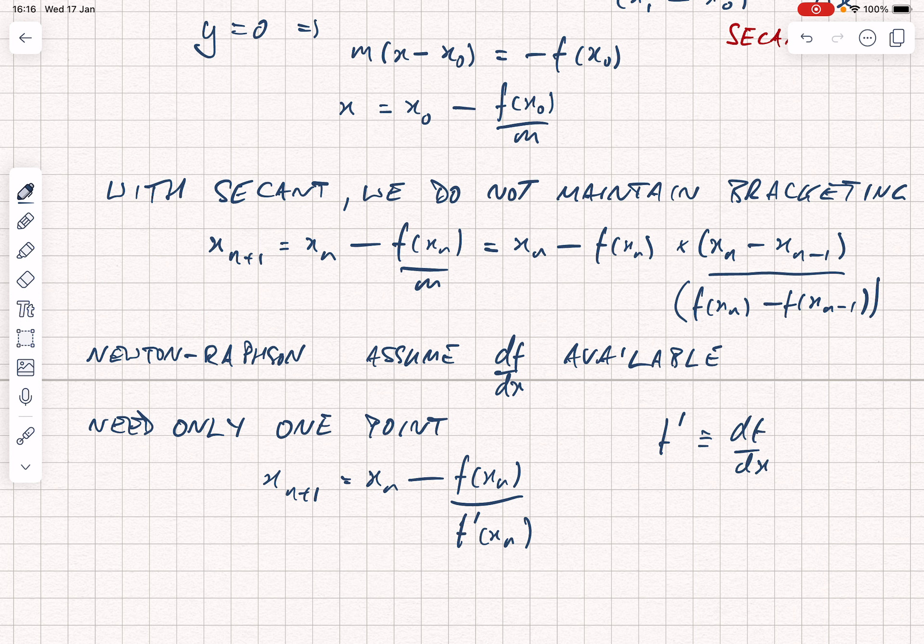The Newton-Raphson method has the advantage that you only need to specify a starting point. But it is, in a sense, even less bounded than the secant method. So, again, you would need to think quite carefully about how to maintain the bounds.